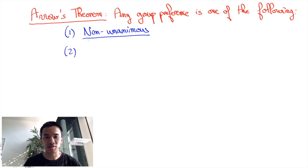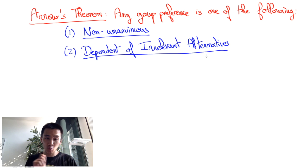2. Dependent of irrelevant alternatives. The group may prefer x to y when considering z, but switch its preference between x and y simply by now considering z. 3. Dictatorial, there is an individual whose preference determines the preference of the group.